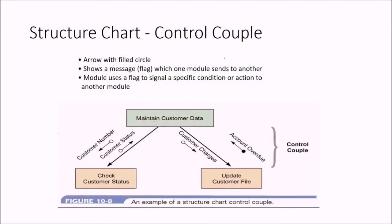A control couple is represented by an arrow with a filled circle. It shows a message — possibly a flag — which one module sends to another. For example, an update customer file module sends a control couple such as 'account overdue' to the maintain customer data module, signaling a specific condition or action.